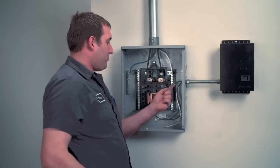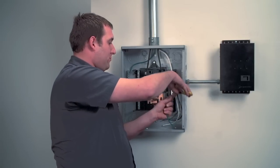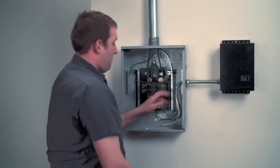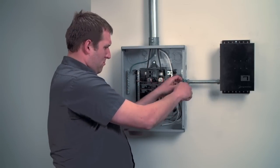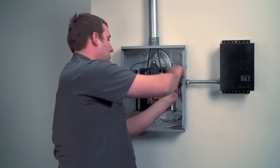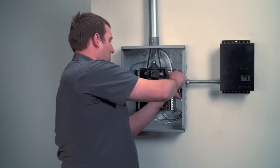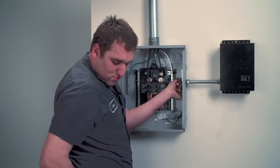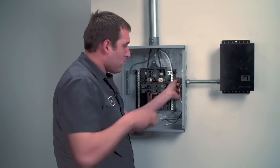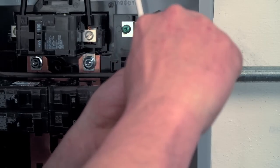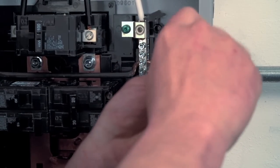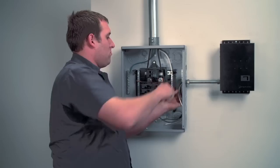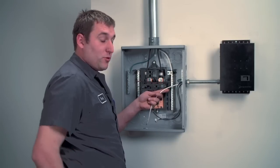The first wire you want to do is you want to hook up your ground. Now, you want to make sure that your wires are as short as possible. The next wire you want to hook up is your white wire or your neutral wire.